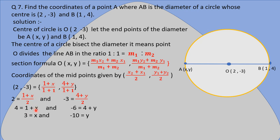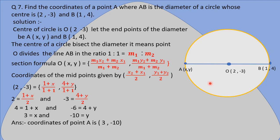Solving the x-equation: 2 × 2 = 1 + x, so 4 = 1 + x, giving x = 3. Solving the y-equation: -3 × 2 = 4 + y, so -6 = 4 + y, giving y = -10. Therefore the coordinate of endpoint A is (3, -10). Remember the midpoint formula: ((x1 + x2)/2, (y1 + y2)/2).